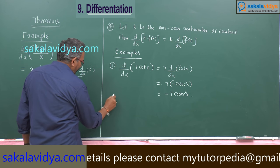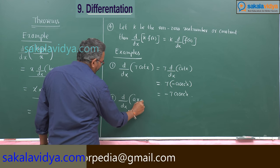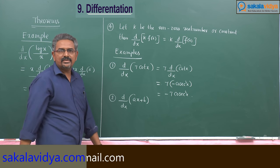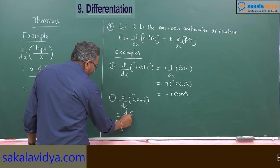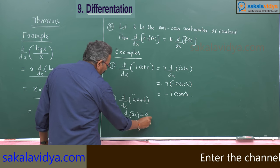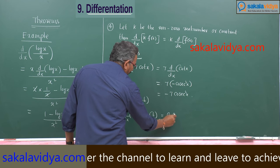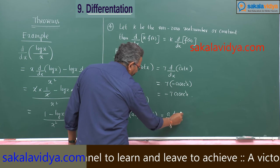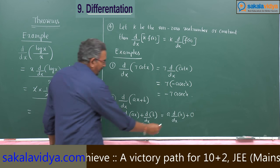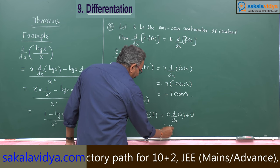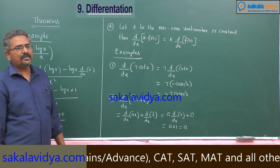Suppose you want to find d/dx of (ax + b), where a and b are constants. This equals d/dx of ax plus d/dx of the constant b. Taking a as common: a into d/dx of x, plus 0. Since the derivative of a constant is 0 and the derivative of x is 1, we get a into 1, which equals a. So hereafter, the derivative of (ax + b) is a.